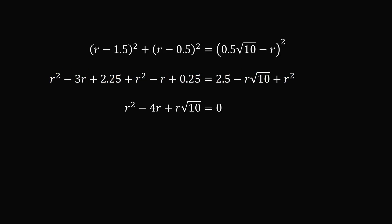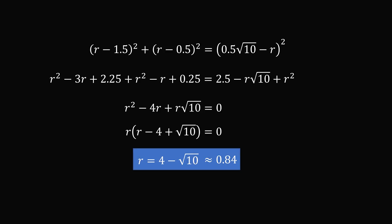We factor in R from this equation. Then the radius has to be greater than 0 by the given information in the problem. So we exclude the solution R is equal to 0, and we just have the solution R is equal to 4 minus the square root of 10, which is approximately equal to 0.84. And that's the answer.